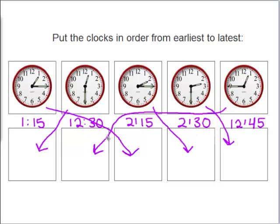So again, our earliest time was 12:30. Then it went 12:45, 1:15, 2:15, and then 2:30. Let's do one more problem.